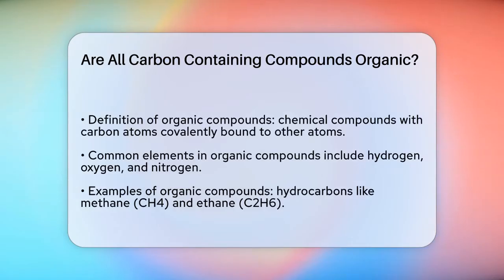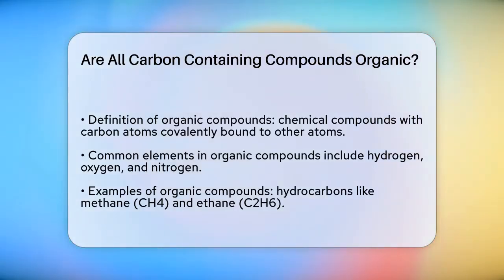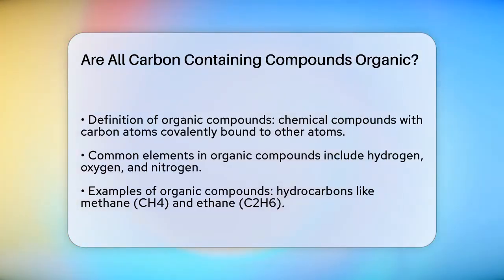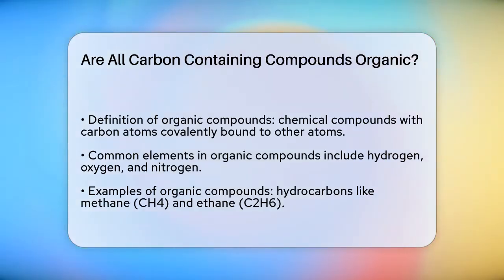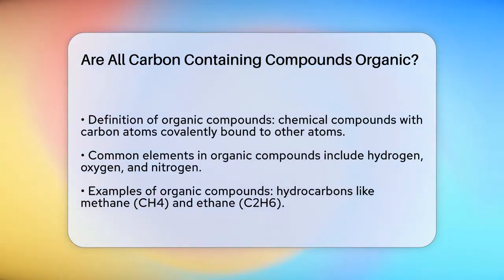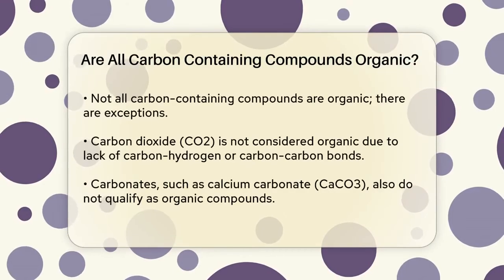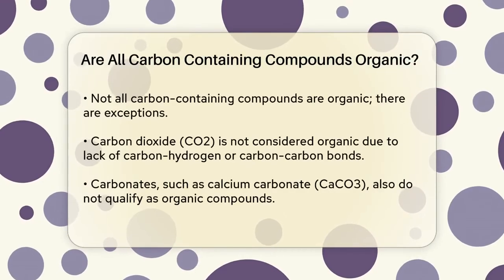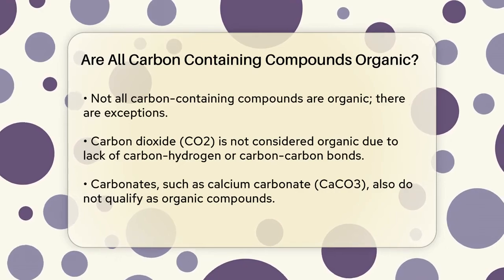First, let's define what an organic compound is. Generally, an organic compound is a chemical compound that contains carbon atoms covalently bound to other atoms, especially hydrogen, oxygen, and nitrogen. For example, hydrocarbons like methane (CH4) and ethane (C2H6) are classic examples of organic compounds because they contain carbon-hydrogen and carbon-carbon bonds.